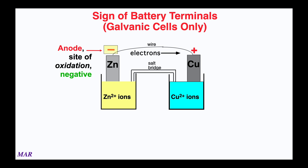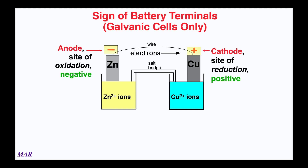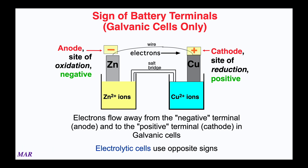The sign of battery terminals in galvanic cells is important. The anode is the site of oxidation, where the electrons come from, and that's the negative terminal — electrons want to get away from the negative side. The cathode is the site of reduction, which wants the electrons, so it's the positive terminal. Electrons in a galvanic cell flow from the negative to the positive side. This works well for galvanic and voltaic cells.